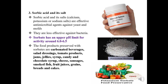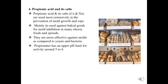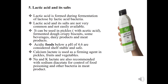Next, propionic acid and its salts — calcium or sodium salts — are used most effectively in the prevention of mold growth and rope. Rope mainly occurs in bakery items, and mold and rope spoilage always occur in bakery products. It is used for mold inhibition in baked goods and in many cheese foods and spreads. Propionates are more effective against molds compared to yeast and bacteria, and have an upper pH limit for activity around pH 5 to 6.